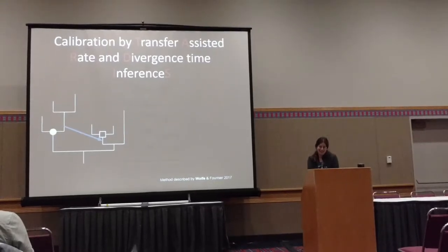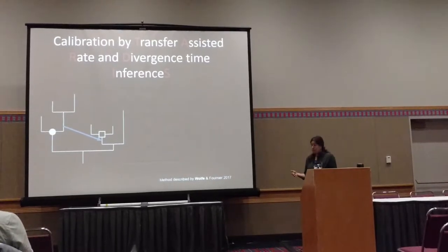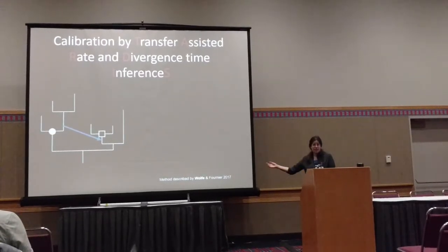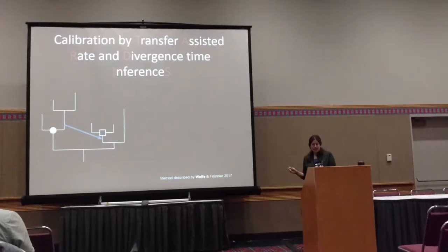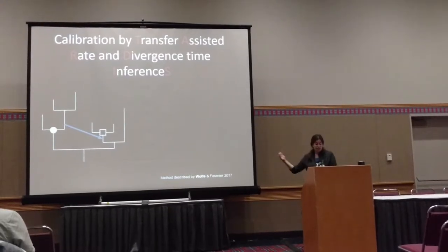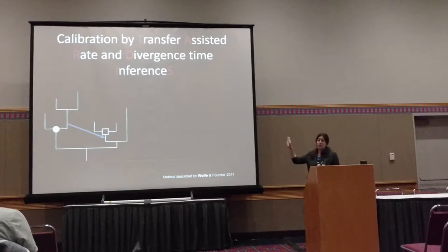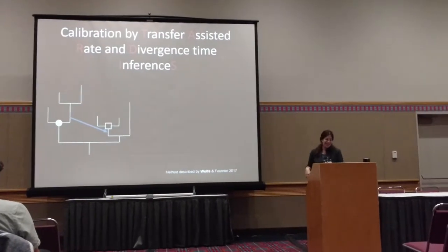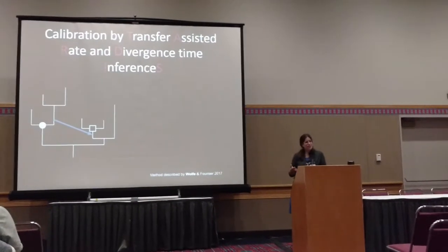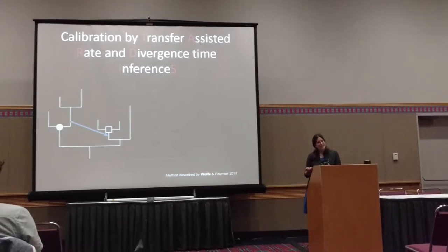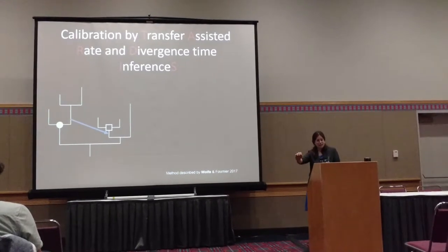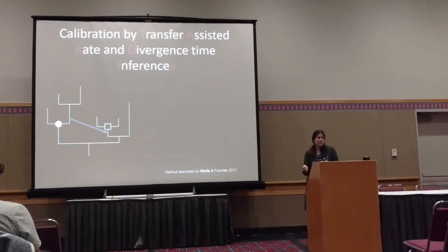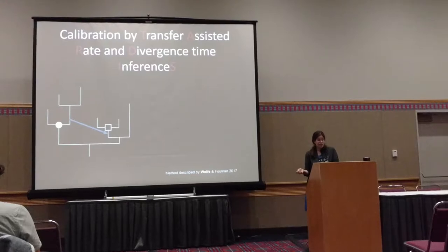One thing developed together with my postdoc advisor Greg Fournier, which we have out in a preprint, was a method that in review they told us we can't call TARDIS. It involves a really important method that is usually thought of as a hindrance to bacterial evolution, which is horizontal gene transfers.